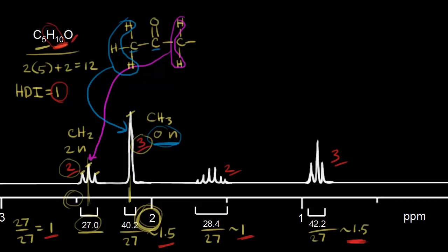Moving to the next signal: two protons, so that's a CH2. Counting the peaks — one, two, three, four, five, six — six peaks. Six minus one equals five, so we would expect five neighboring protons.